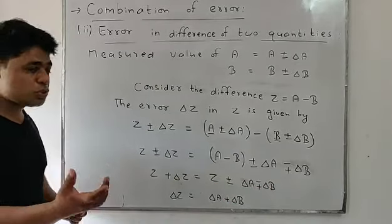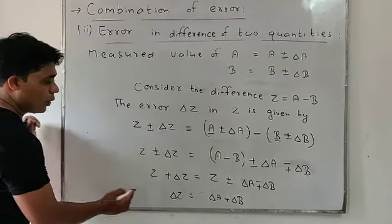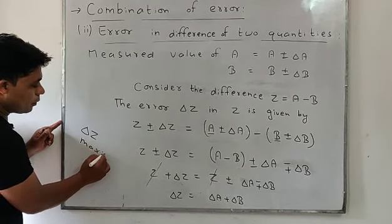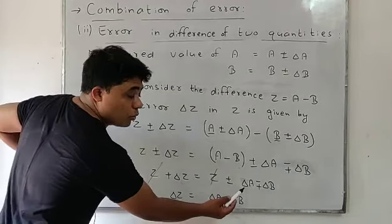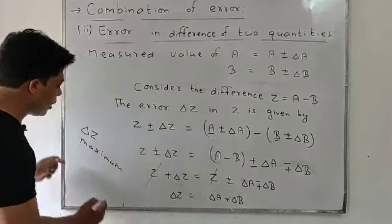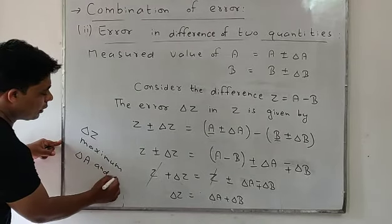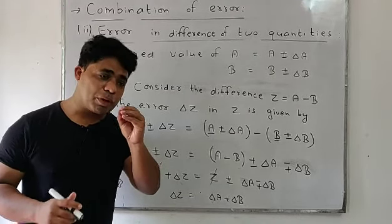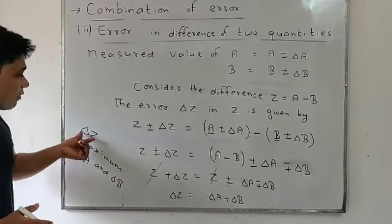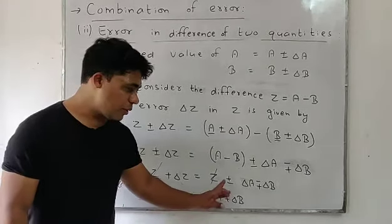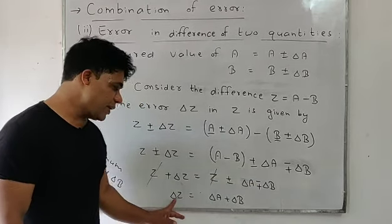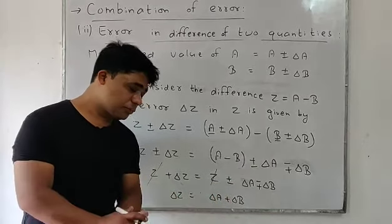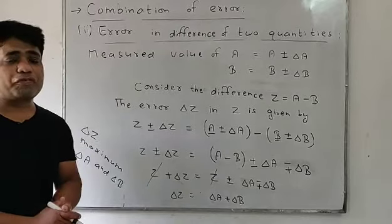Since a minus b equals z, the z cancels. We have delta z equals plus-minus delta a and minus-plus delta b. For getting the maximum possible error, delta a and delta b should have the same sign, so we take both positive. Therefore delta z equals delta a plus delta b. This is the error in the difference of two physical quantities.